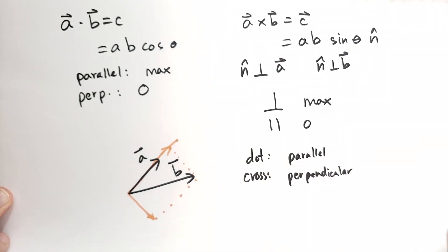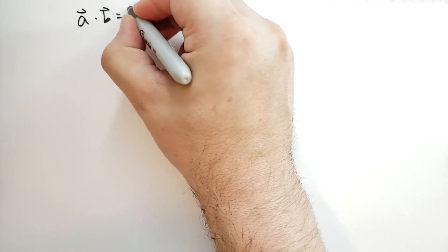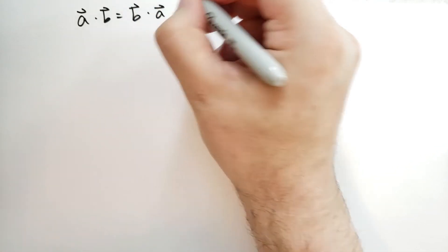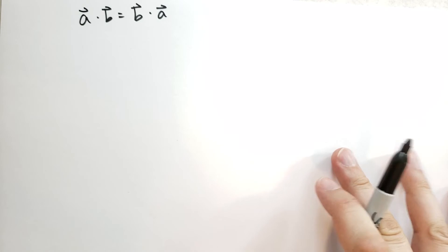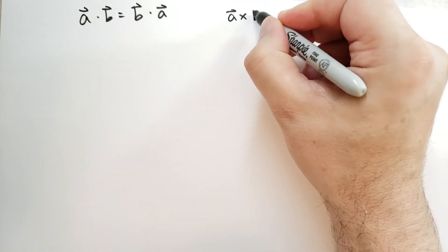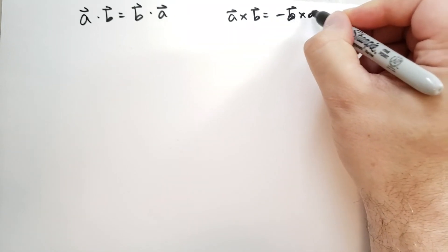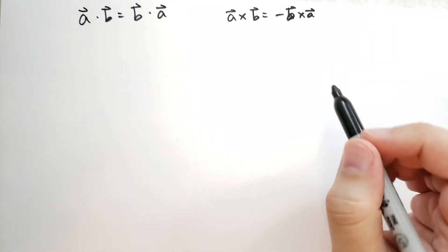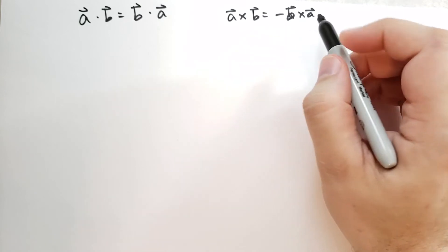Let's talk about some of the properties of the dot and cross products. Note that the dot product is commutative — this means you can reverse the order of the two vectors and the answer doesn't change. However, the cross product is anti-commutative: if you reverse the order, the direction of the vector is reversed.